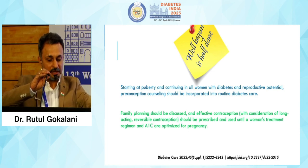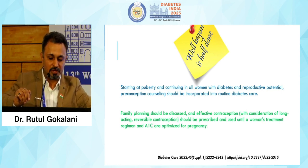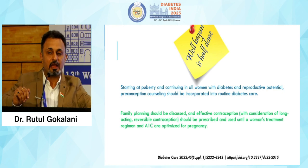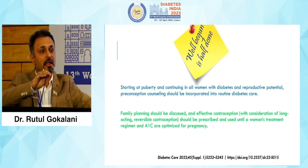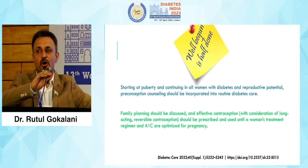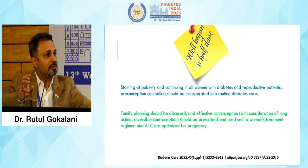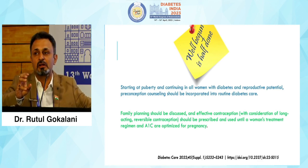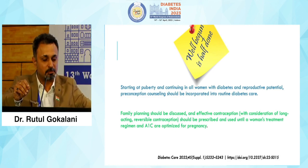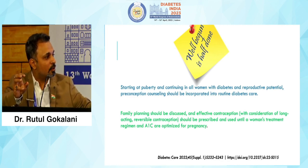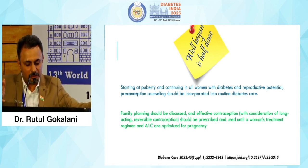Starting at puberty and continuing in all women with diabetes of reproductive potential, preconceptional counselling should be incorporated into routine diabetes care. Diabetes Care 2022 published that any lady of reproductive age who is diabetic should ideally achieve glycemic control of HbA1c less than 7% as soon as possible, since 'galti se ho gaya' complications can occur if HbA1c is not at target.